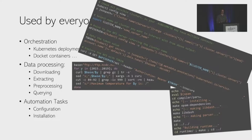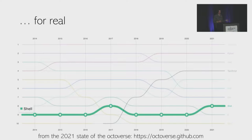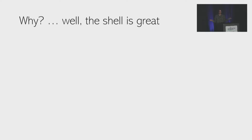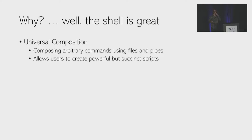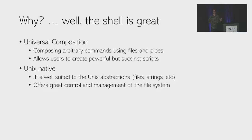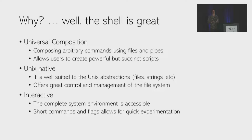It has been steadily in the top ten programming languages based on the GitHub survey, so the shell is actually unavoidable. It's ubiquitous because it has many great properties: universal composition, composing arbitrary commands using files and pipes to create powerful and succinct scripts; it's Unix native, well suited to files and strings; and it's also interactive, so the complete system environment is accessible. No other programming environment can substitute it.